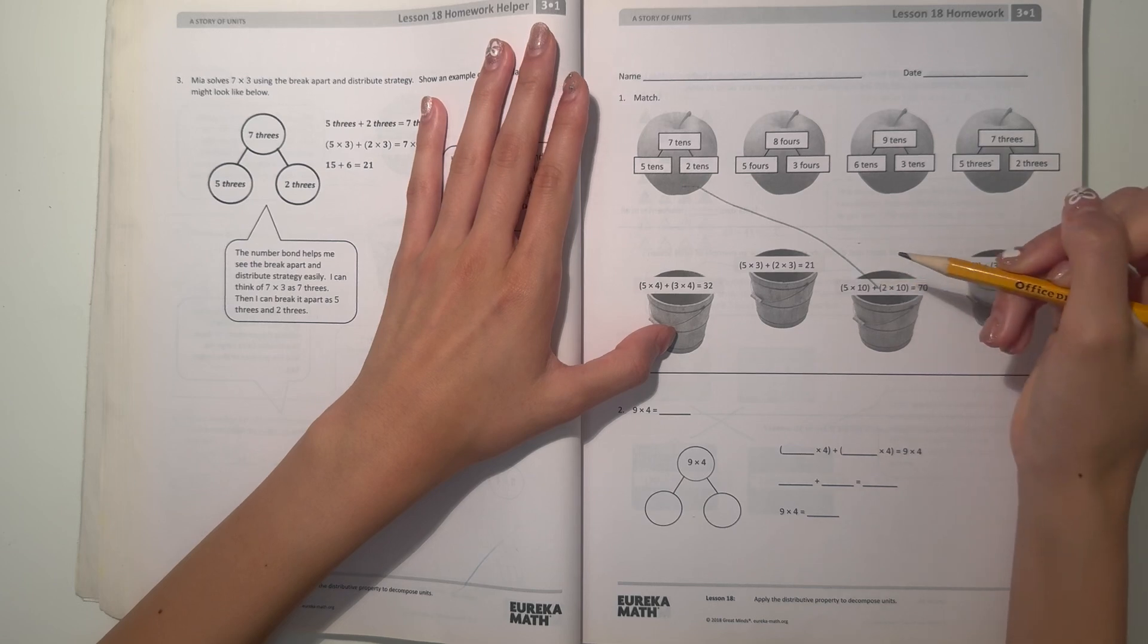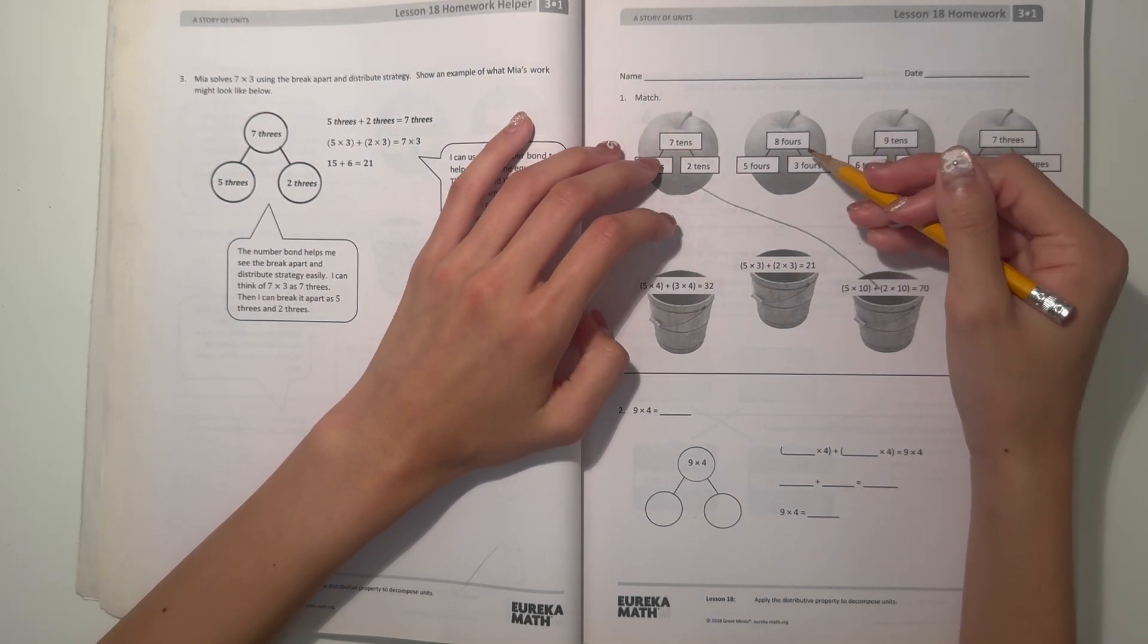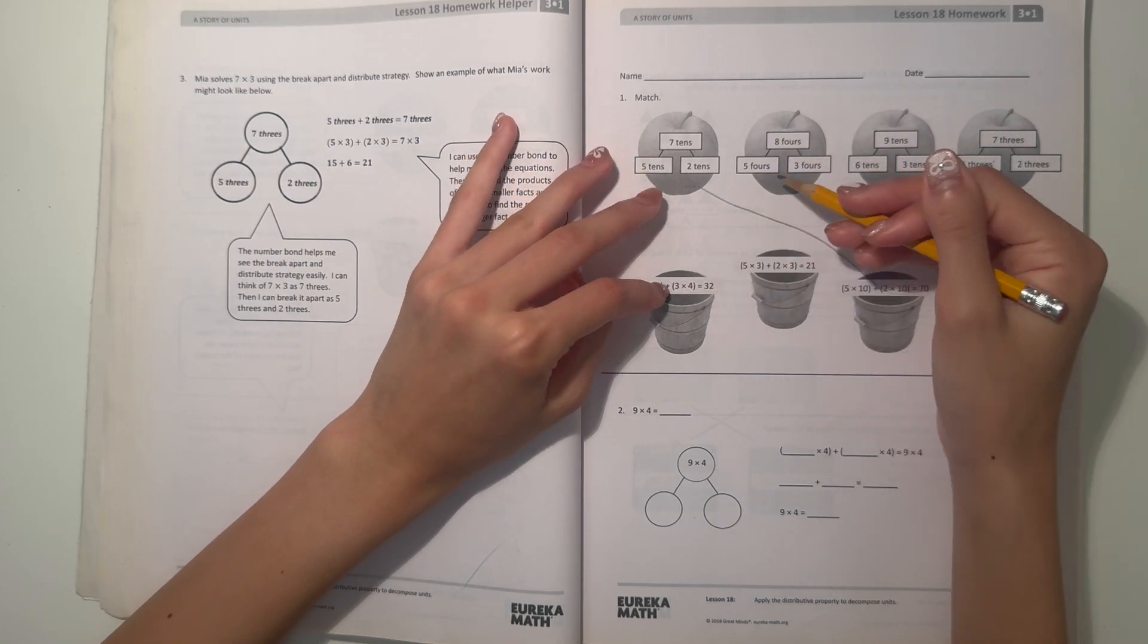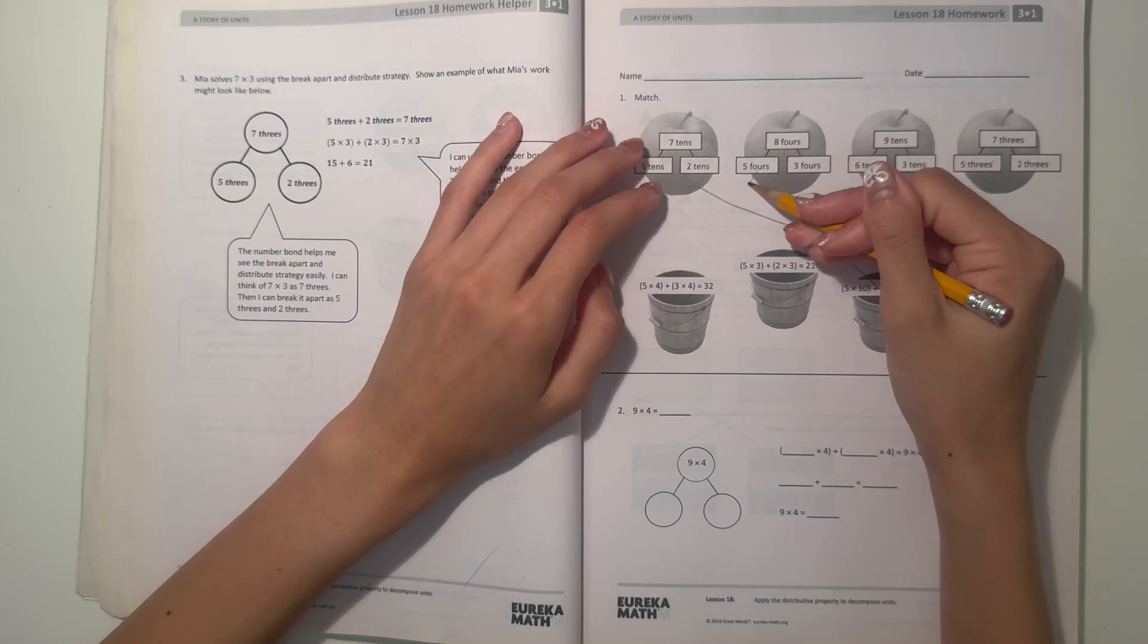these two match. Now we have eight fours, so we have five fours plus three fours equals eight fours. So five fours, five times four, plus three fours, three times four, equals 32 which is eight fours.